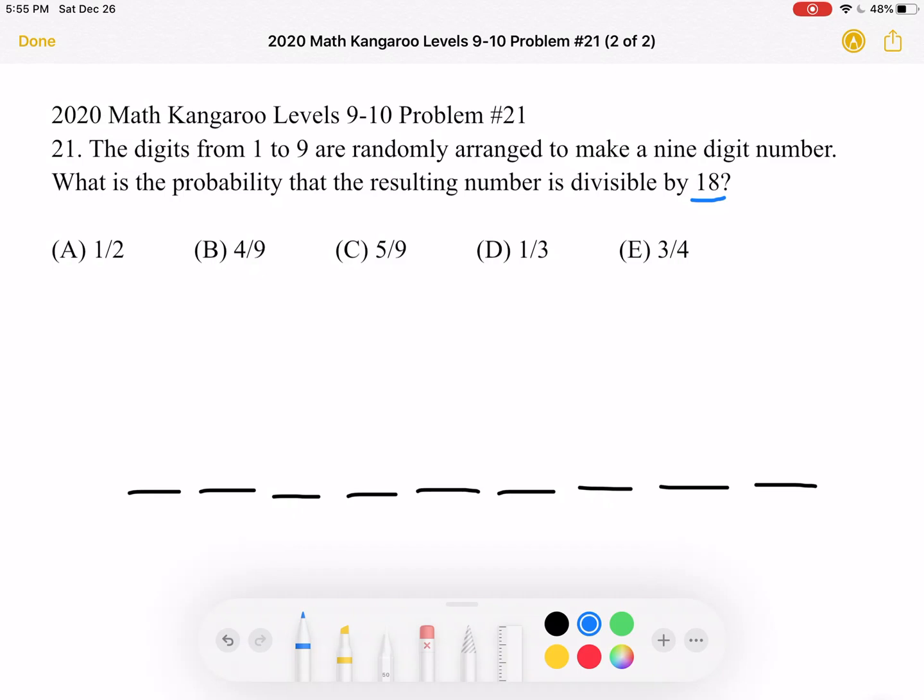So if something is divisible by 18, it must be divisible by its factors. And we can say 18 is 2 times 9.